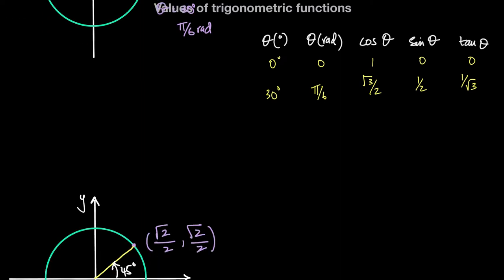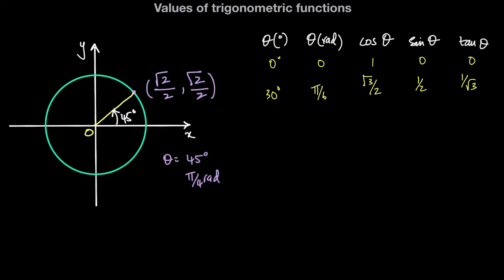When theta is equal to 45 degrees, that's pi over 4 radians, because one fourth of 180 is 45. With a radius of one unit, the x-coordinate on the unit circle is square root of 2 over 2, and the y-coordinate is also square root of 2 over 2. So when theta is 45 degrees or pi over 4 radians, cosine theta is square root of 2 over 2, sine theta is square root of 2 over 2, and tan theta — the ratio of sine to cosine — is equal to 1.